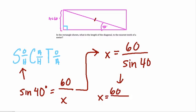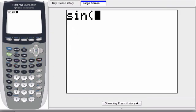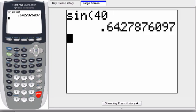So we have 60 over the sine of 40. So we just enter the sine of 40, press enter, and we get 0.6427876097.